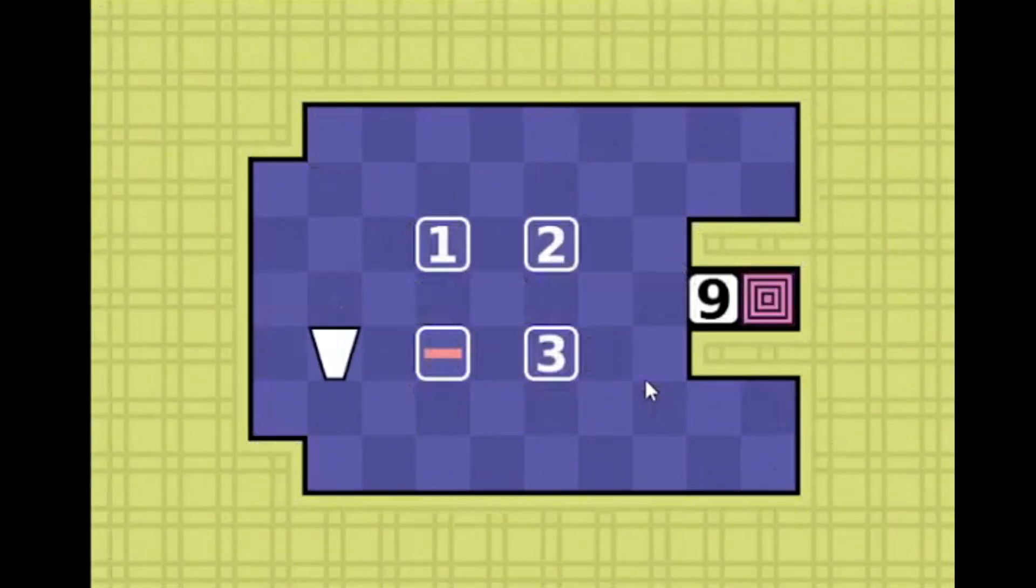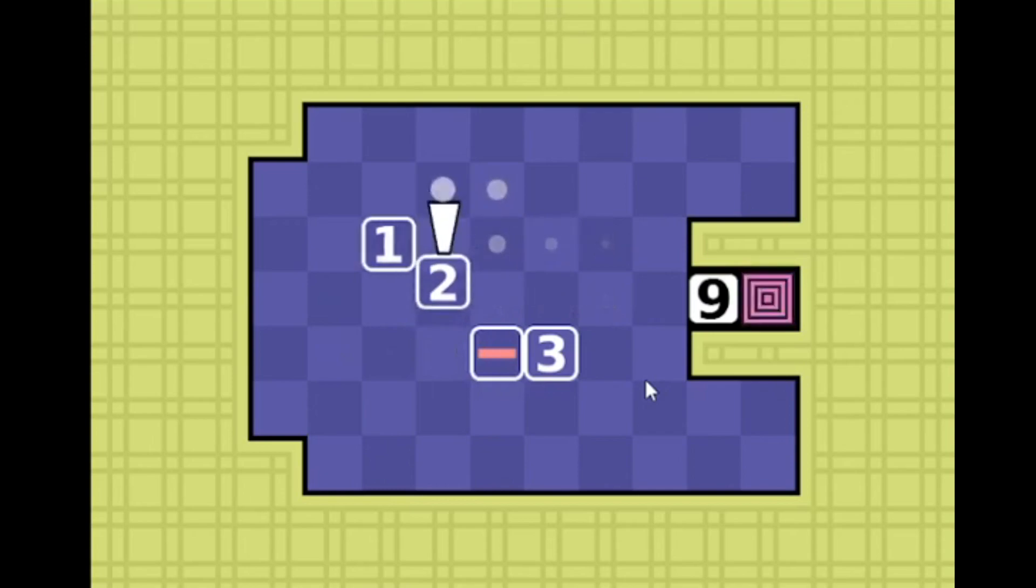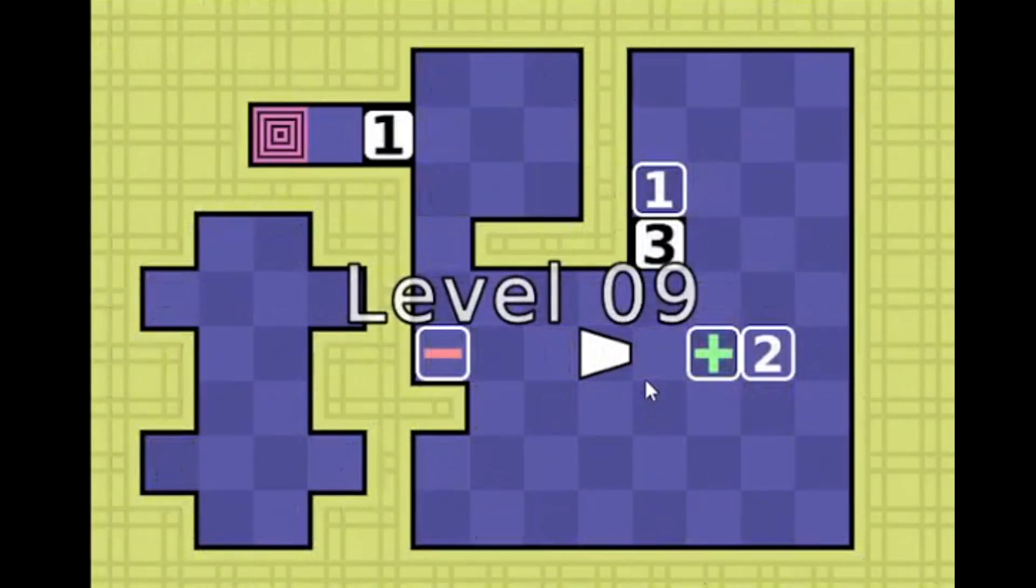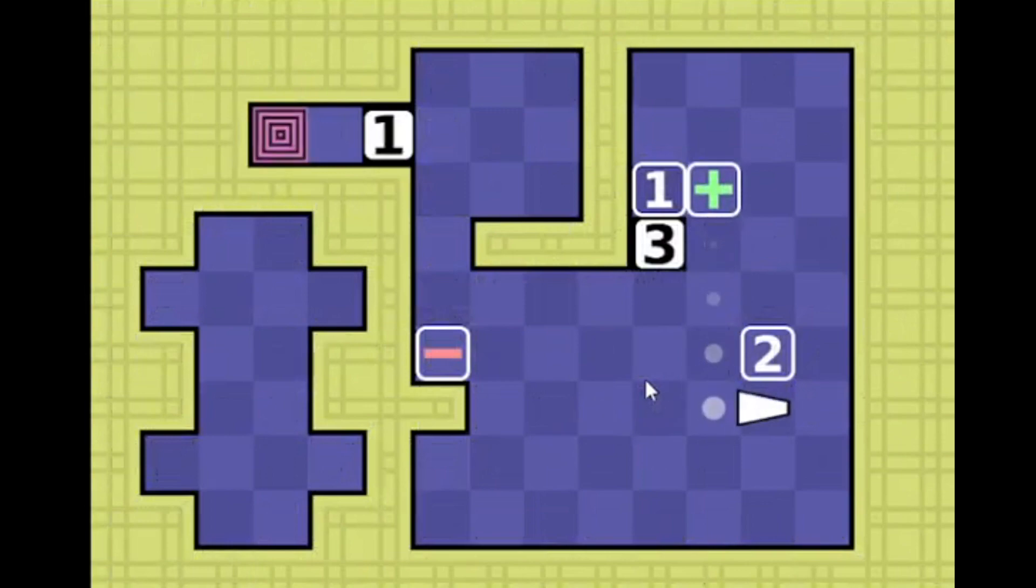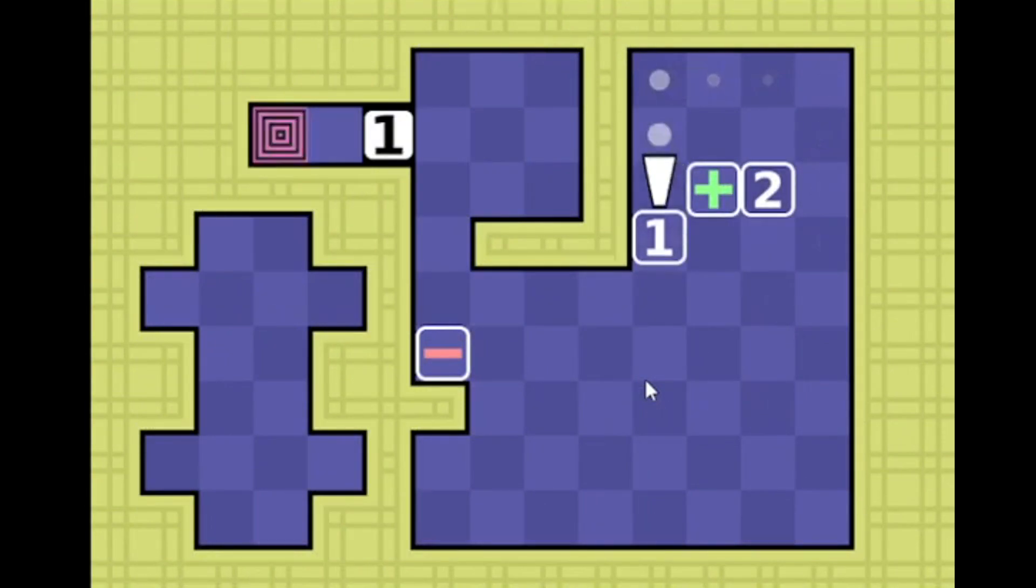9. That's 12 minus 3. Nice. Okay, now we got this blocking the way here. What's that? Negative 1 plus 2. Okay, cool.